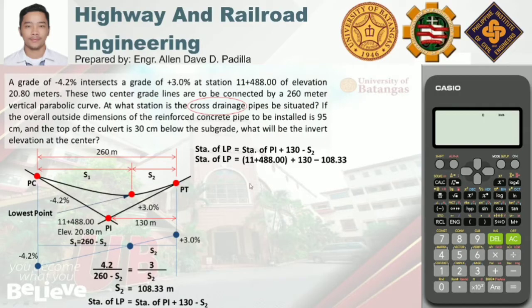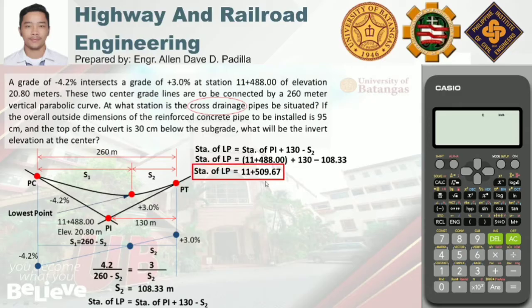Substituting values: stationing of PI is 11 plus 488, plus 130 minus 108.33. Computing: 11,488 plus 130 minus 108.33 gives 11,509.67, or station 11 plus 509.67. That is our final answer for the first question.